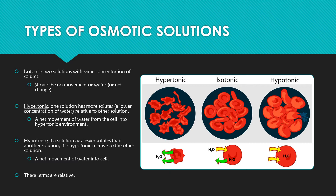If we place a blood cell into a hypotonic solution, that means the solution has fewer solutes than the inside of the cell. The inside of the cell would be hypertonic relative to the outside hypotonic environment — because these are relative terms. So if the outside of the cell is hypotonic, water is going to move into the hypertonic environment inside the cell, causing the cell to expand and basically lyse. In the case of a blood cell, it's going to explode because all that water has come in. Again, these terms are relative, and it's just the movement of water.